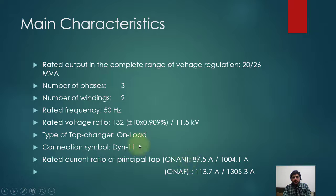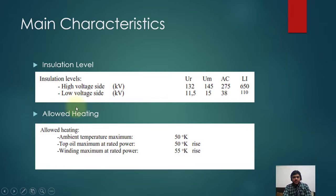You can see insulation levels are mentioned here. Basically, this is rated current, this is maximum current, and this is the peak value. This is lightning impulse, and this is the highest voltage of the equipment.